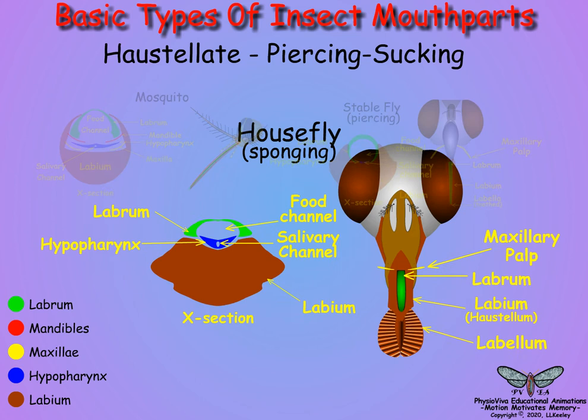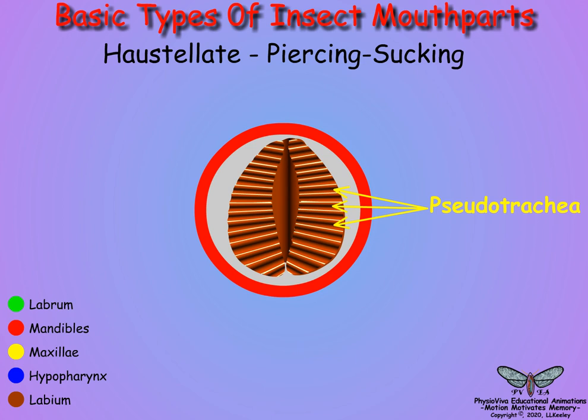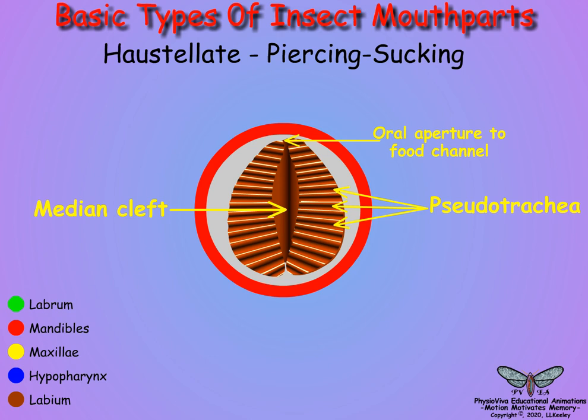Non-biting Diptera, such as house flies, blow flies, and fruit flies, have retractable sponging mouthparts comprised of the labrum and hypopharynx that form the food channel, and lie in an interior groove of the labium, which ends in two broad soft oval labella to form the labellum. Here is a close-up of the labellum's sponging structure. The labellar pads consist of transverse rigid grooves called pseudotrachea, that connect to a median cleft, which forms an oral aperture leading to the food channel between the labrum and the hypopharynx.